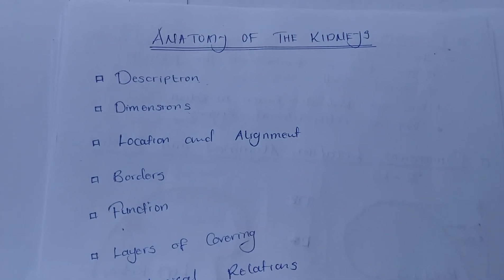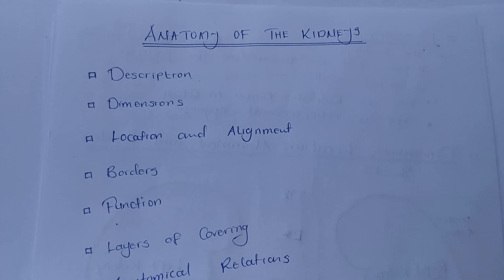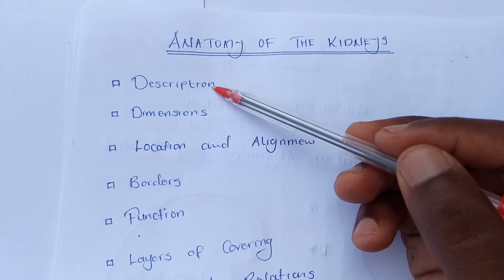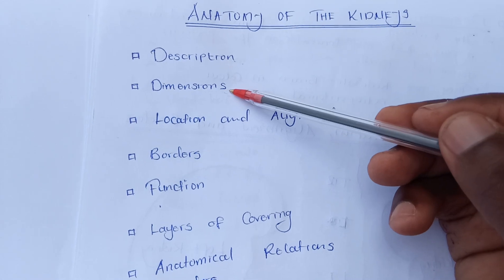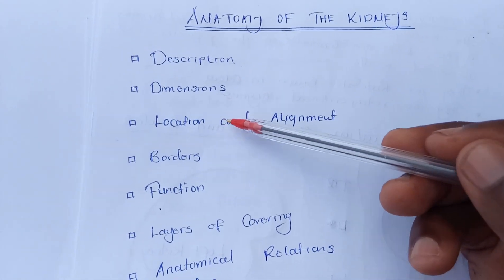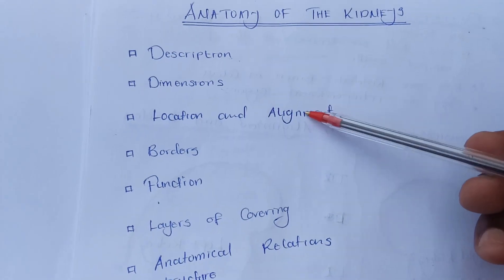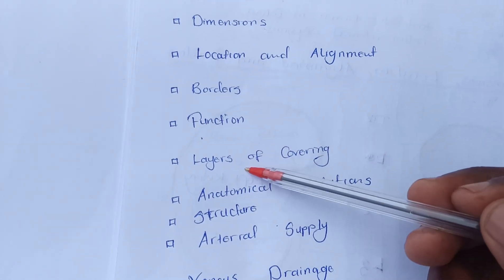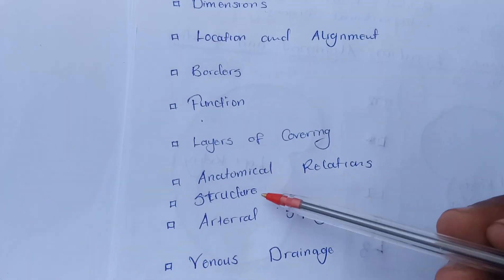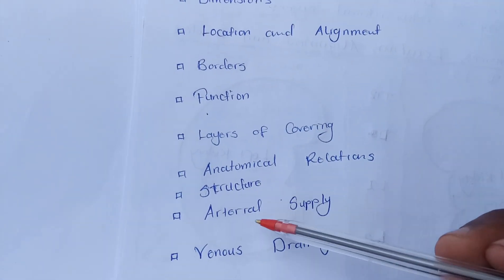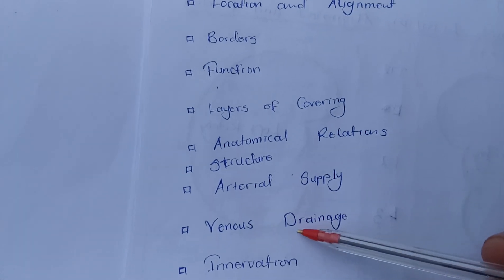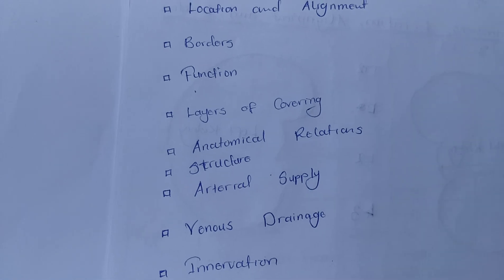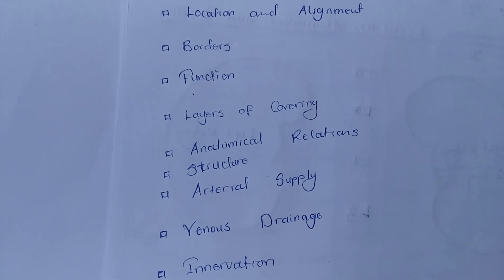Before I begin, let me coast you through the things we're going to look at: the description, dimensions, location and alignment, borders, function, layers of covering, anatomical relations, structure, arterial supply, venous drainage, innervation, and possibly clinical correlations.